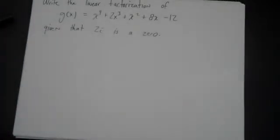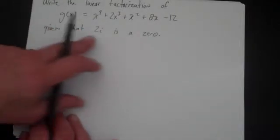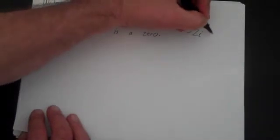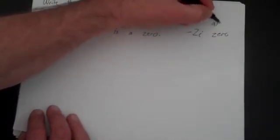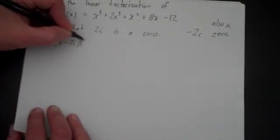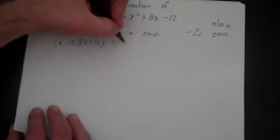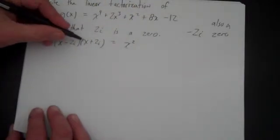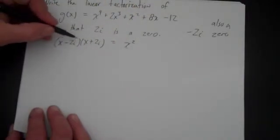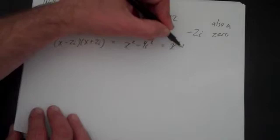Let's do one last problem: write the linear factorization of x⁴ + 2x³ + x² + 8x - 12 = 0, given that 2i is a zero. Well, the first thing is if 2i is a zero, then minus 2i is also a zero — the complex conjugate theorem. Which means x minus 2i and x plus 2i are both factors. If I FOIL that out, I get x² - 2xi + 2xi — those cancel — minus 4i². Since i² = -1, that's x² + 4.